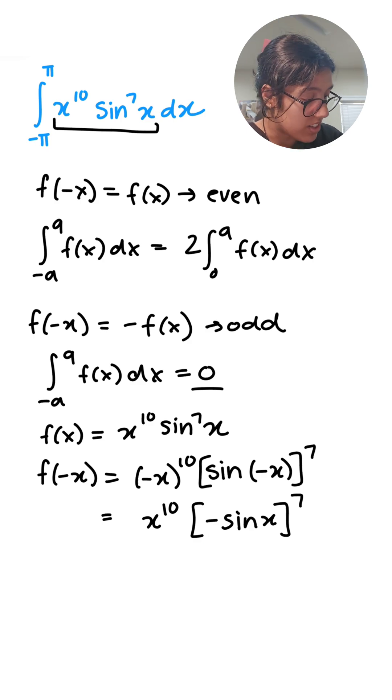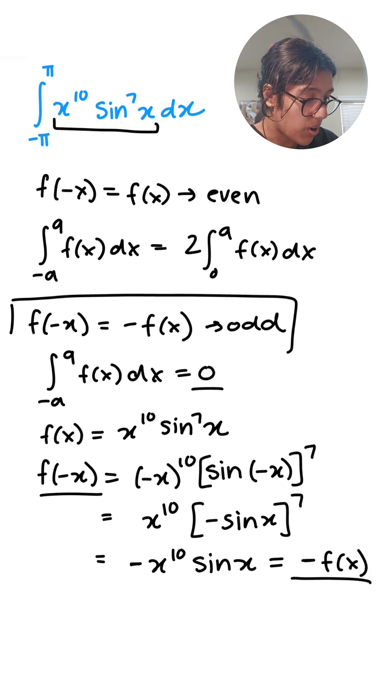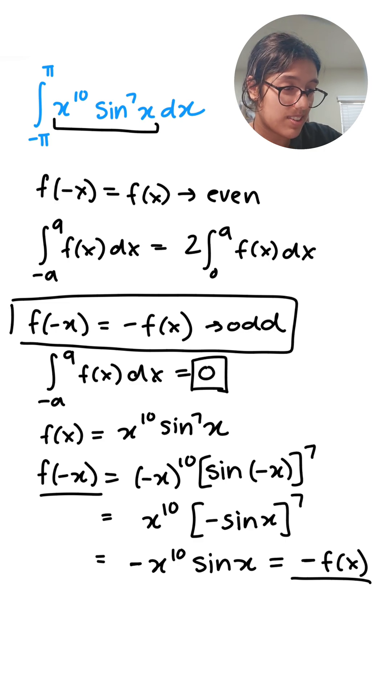So since f of negative x is equal to negative f of x, that is this part over here where we have an odd function. So our final answer is just going to be zero.